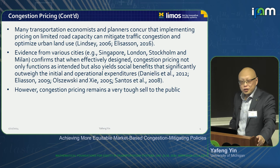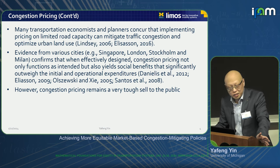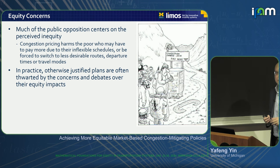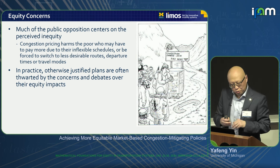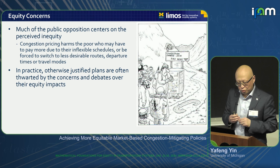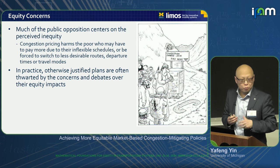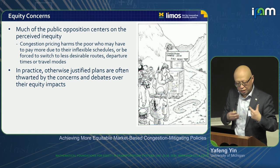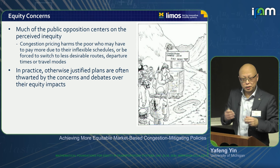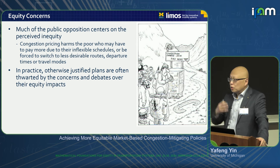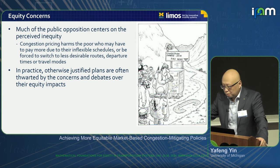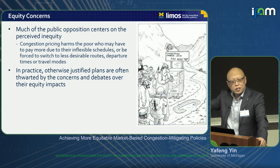However, congestion pricing remains a very tough sell to the public. Much of the public opposition centers on equity — perceived inequality. They argue that congestion pricing harms the poor more than the rich, because the poor have inflexible schedules and therefore have to pay the toll, or they will be priced off and forced to switch to less desirable routes, departure times, and travel modes. This argument has won the debate many times, and good proposals have actually been abandoned — we saw this happen in Hong Kong, Cambridge UK, and previously in New York City.